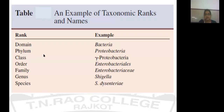Here you can see an example of the taxonomic rank using the species Shigella dysenteriae. This organism is classified in the genus Shigella, the family is Enterobacteriaceae, the order is Enterobacteriales, the class is gamma-Proteobacteria, the phylum is Proteobacteria, and the domain is Bacteria.